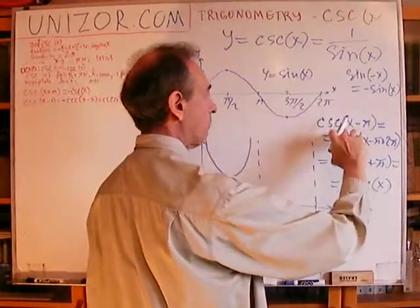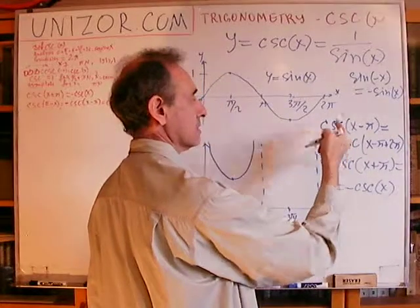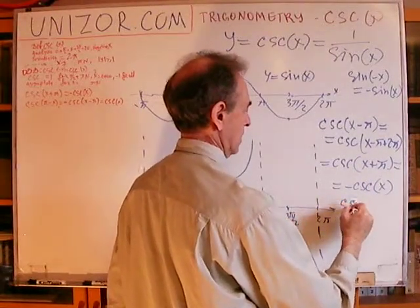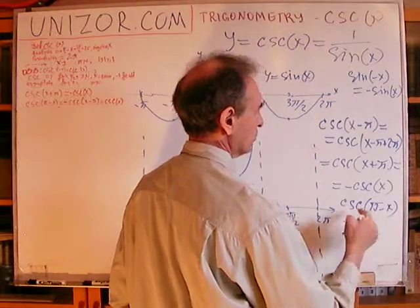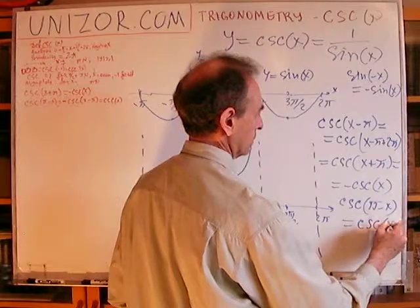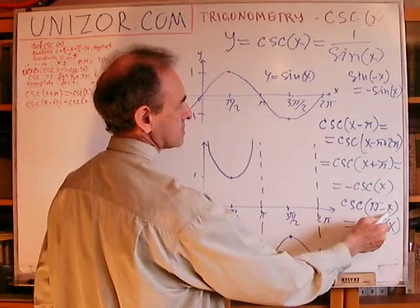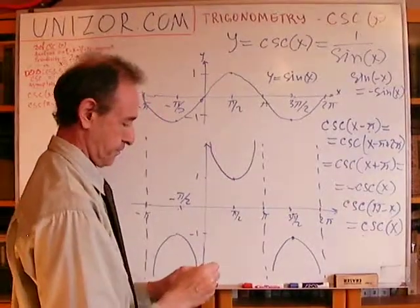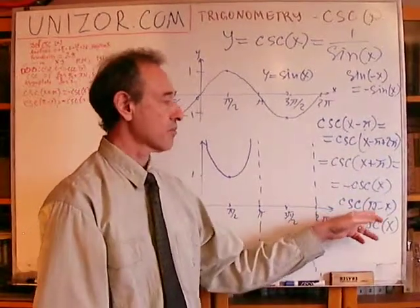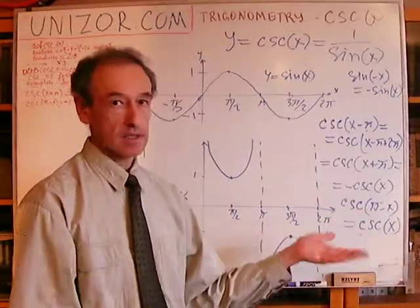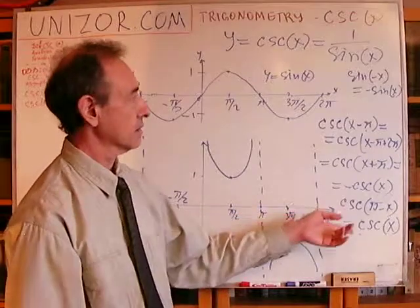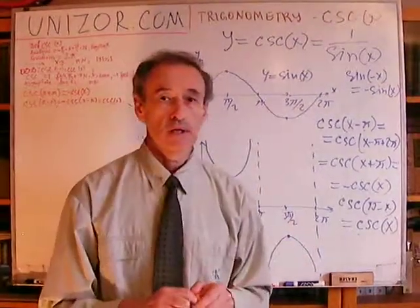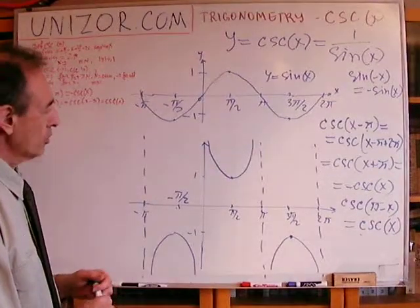Now csc(π - x), since cosecant is an odd function, would be equal to csc(x). And always π - x, that would always equal csc(x). Why? Because this is negative to this and the function is odd, so this should be negative to this. And in addition, if you remember, sin(π - x) is the same as sin(x), and obviously 1 over sine would be the same.